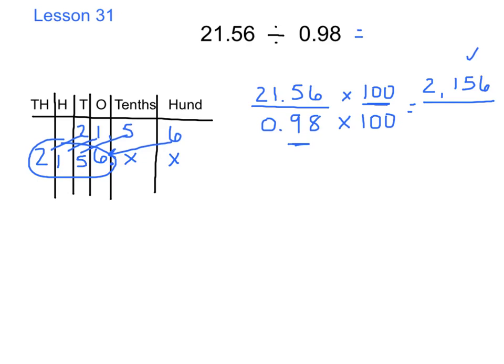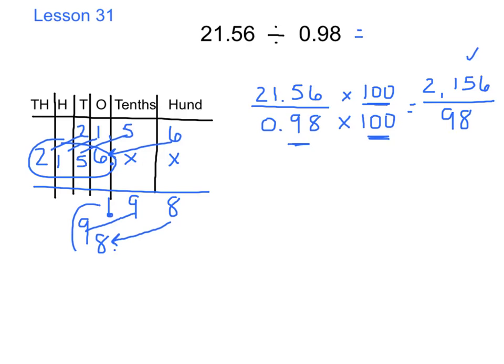Now let's look at our denominator: 98 hundredths times 100 equals 98. Let's verify with the place value chart — I'll put in 98 hundredths (decimal point, 98). Because I'm multiplying by 100, I shift two places to the left: the 8 goes in the ones place and the 9 in the tens place. So our whole number is 98.